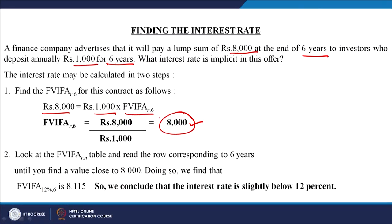Having found the future value interest factor of 8, you refer to that table. In the table, rows represent number of years (vertical axis) and columns represent rate of interest (horizontal axis). Against 6 years, you look across different interest rates: 2%, 4%, 6%, 8%, 10%, 12%, and so on.